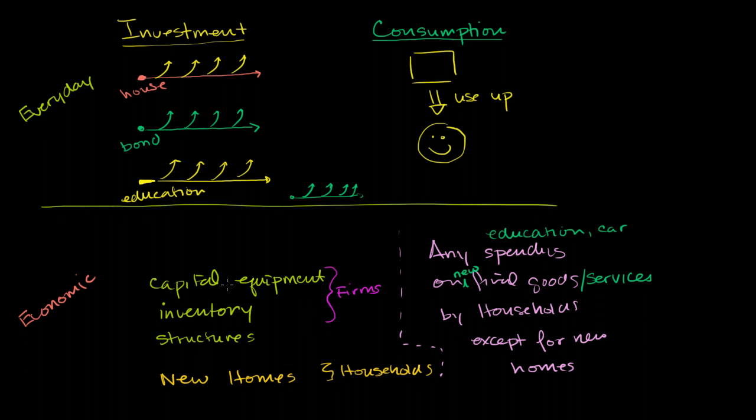And the whole reason, or at least as far as I understand, the whole reason why it's set up this way is this is easier to account for. You look at all of the spending by firms, that's easy to account for. You essentially call that investment because, at the end of the day, all the spending that firms are making is they're doing it to produce some good or service.